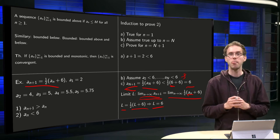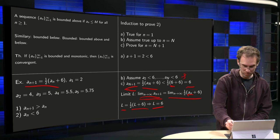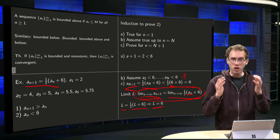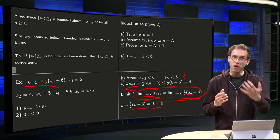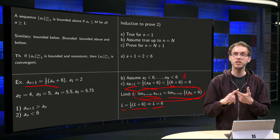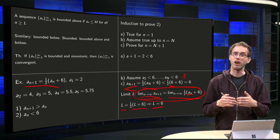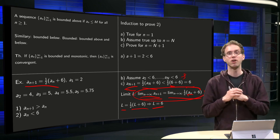So here we used this property that we, in order to take this step over here, we have to know that the limit exists. We know that because our sequence is bounded and increasing, monotonic. Using this information we were able to deduce the limit of our sequence.